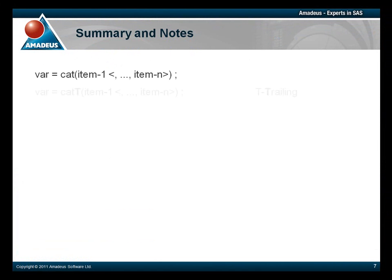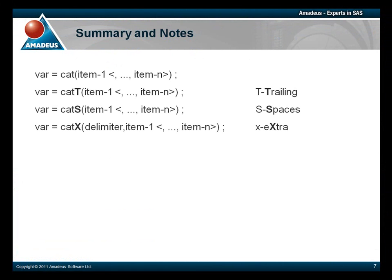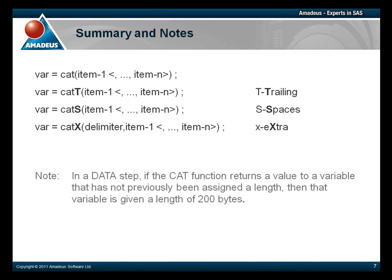So to conclude, in this podcast we have looked at four different CAT functions: the CAT function, the CATT function — T for trailing spaces, the CATS function — S for both leading and trailing spaces, and the CATX function — X for including an extra delimiter and removing both leading and trailing spaces. We have explored the syntax for each function and reviewed a comparison against previous methods in SAS for producing the same output. It is worth noting that when the CAT functions are used within a data step, if the CAT function returns a value to a variable that has not previously been assigned a length, then that variable is given a length of 200 bytes.